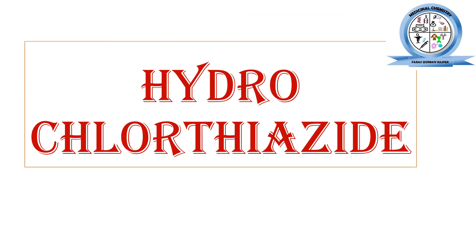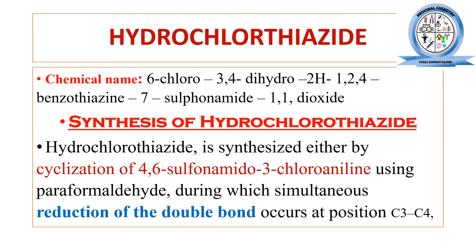Hydrochlorothiazide is another example of a thiazide diuretic. The chemical name of hydrochlorothiazide is 6-chloro-3,4-dihydro-2H-1,2,4-benzothiazine-7-sulfonamide 1,1-dioxide. We can observe in its chemical structure that there is only one difference: the 3,4-dihydro position — indicating reduction of the double bond at carbon positions three and four.